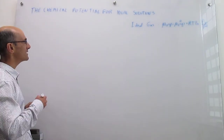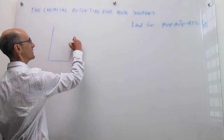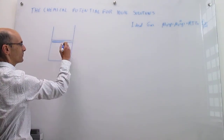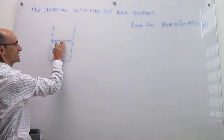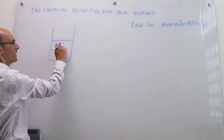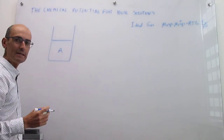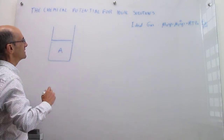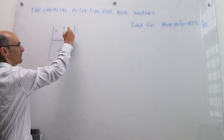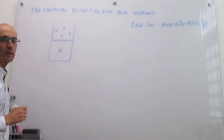We're going to start this video by considering just a pure liquid, which we'll call A — this could be water or ethanol or anything you want — and this pure substance is at equilibrium with its gas, with a vapor pressure of this gas. There is equilibrium here.